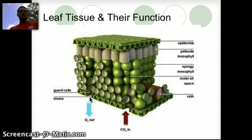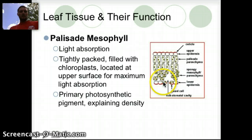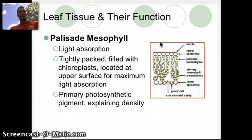I'll put some of these images on the website so you can take a closer look. To break down some of these different structures: the palisade mesophyll is primarily for light absorption. These are tightly packed cells towards the top, filled with chloroplasts, located at the upper surface primarily for maximum light absorption. Their job is to absorb that light — they have the photosynthetic pigment — and their density explains why they're so tightly packed.